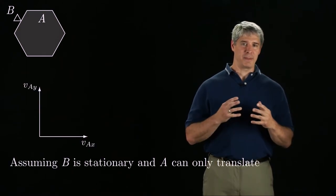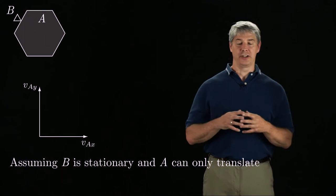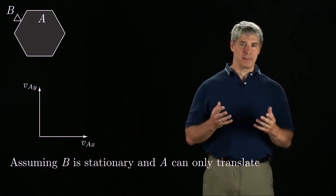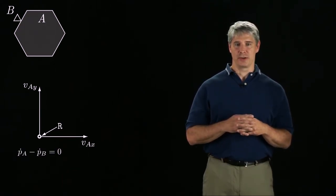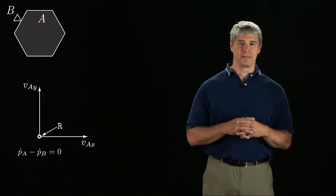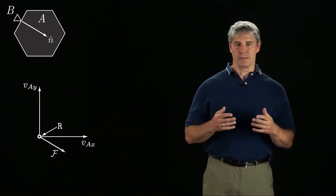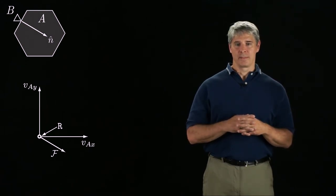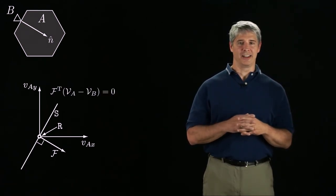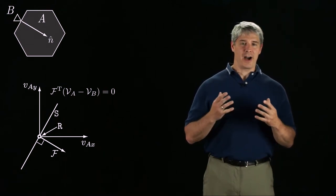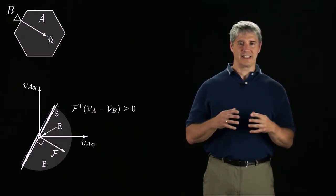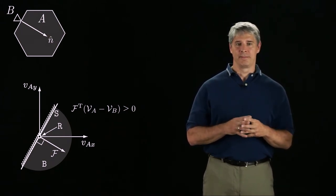Let's look at an example where A is a planar hexagon and B is a stationary triangle. For ease of drawing, let's assume that the planar bodies cannot rotate, so the space of twists for A has only X and Y linear components. Since B is stationary, the twist of A that satisfies the rolling condition is the zero twist. The contact normal can be expressed as a wrench F in the twist space, and the twists that cause sliding are on the line orthogonal to F. Finally, the set of twists that break contact is the entire half-plane to the right of the S line. Twists to the left of this line would cause penetration.